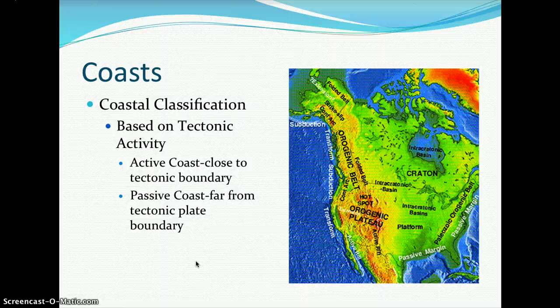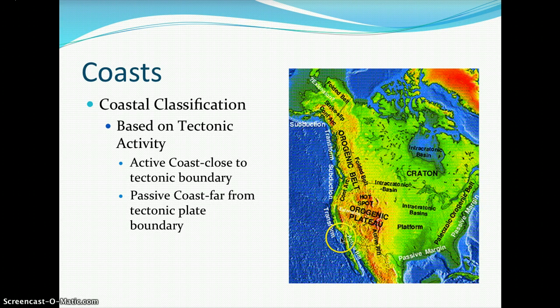In the eastern United States, the active plate boundary is along the Mid-Atlantic Ridge where new crust is being formed, so the eastern U.S. coastline is a passive margin with no tectonic plate boundary. However, the western United States — California, Washington, Oregon — has plates coming together and transform plate boundaries, making those coastal surfaces very active.